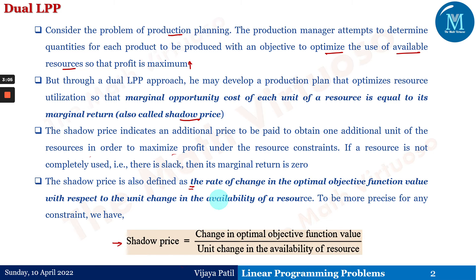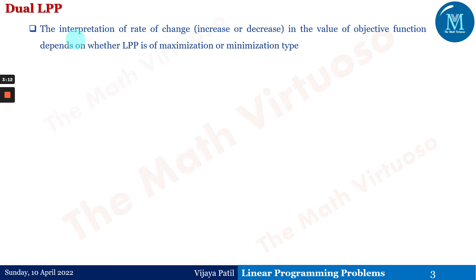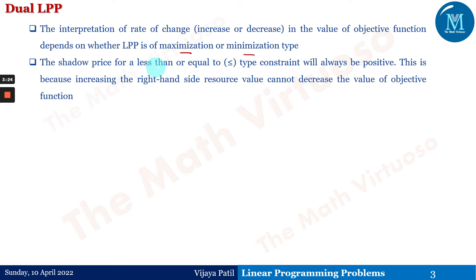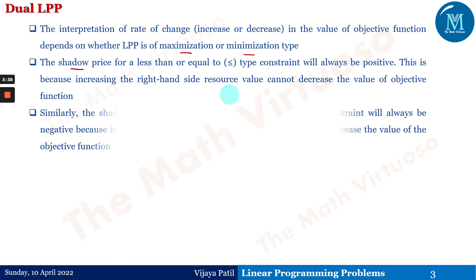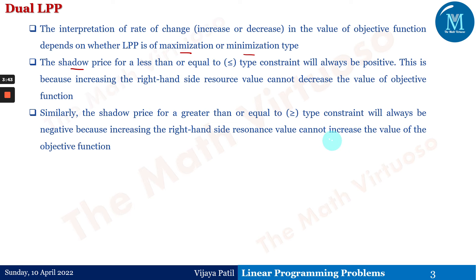It is a very important concept to note why we need the dual of a given problem. The interpretation of the rate of change — increase or decrease in the value of the objective function — depends on whether the LPP is of max or min type. The shadow price for a less-than-or-equal-to type constraint will always be positive, because increasing the right-hand side resource value cannot decrease the value of the objective function. Similarly, the shadow price for a greater-than-or-equal-to constraint will always be negative, because increasing the right-hand side resource value cannot increase the objective function value.